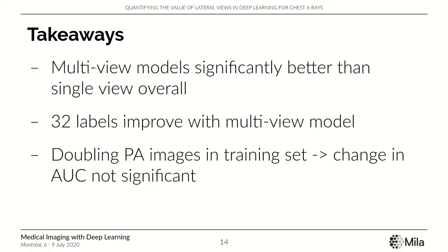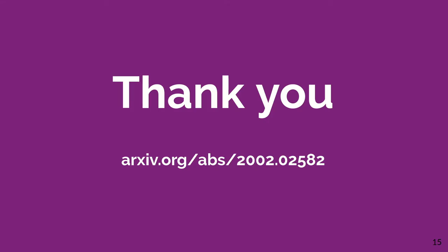To conclude, our main takeaways are that multi-view models are definitely better, with improvement seen in 32 labels for the multi-view model. We also see that doubling the dataset size does not bring about a large change in AUC compared to using a multi-view model. Thank you.